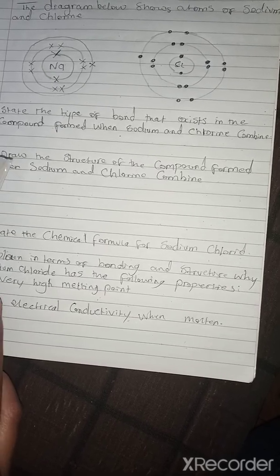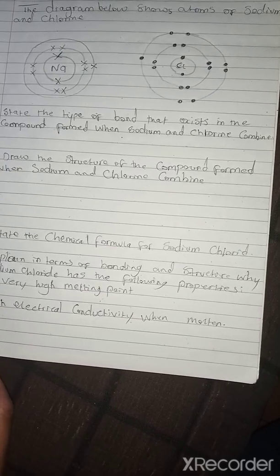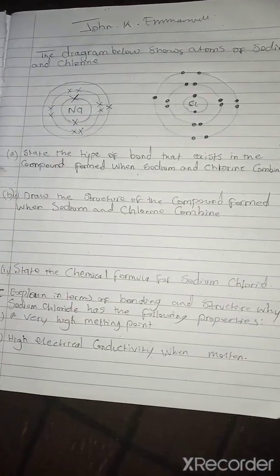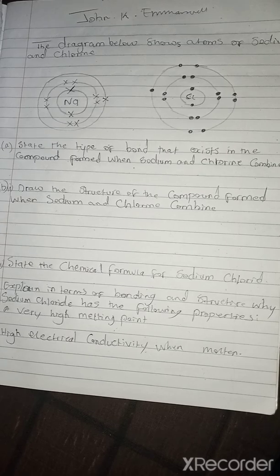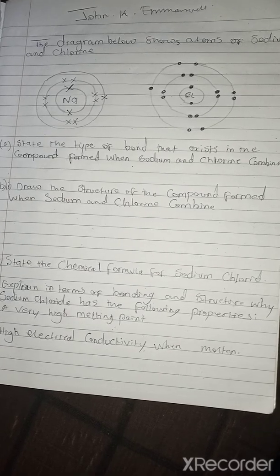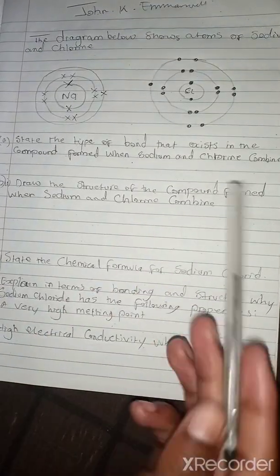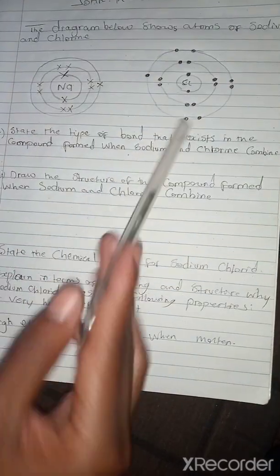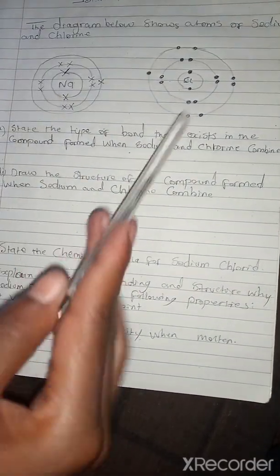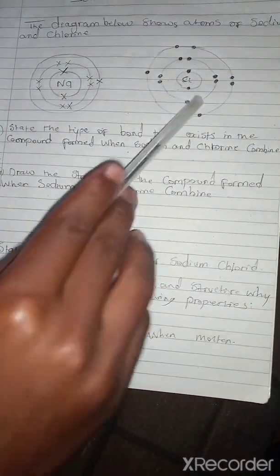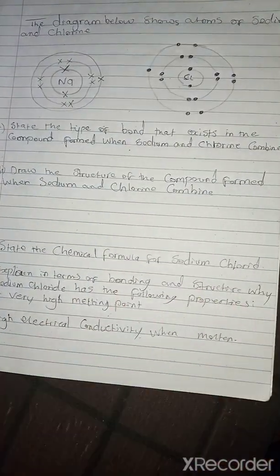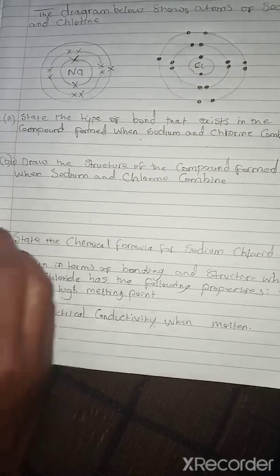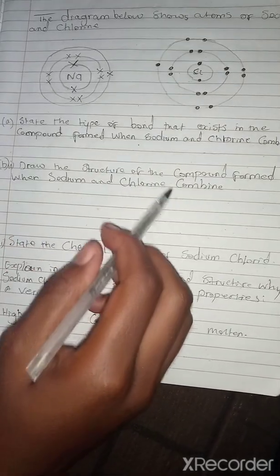The suitable answer for part A is ionic bonding, because ionic bonding is the type of bond that occurs between metals and non-metals. Here sodium is a metal and chlorine is a non-metal. So our answer for A is ionic bonding. For part B, they are telling us to draw the structure of the compound formed when sodium and chlorine combine.